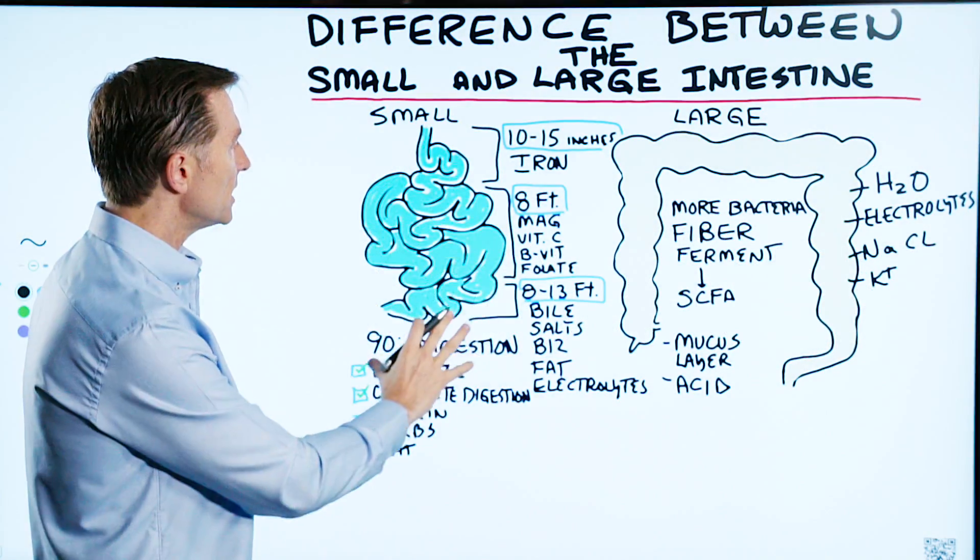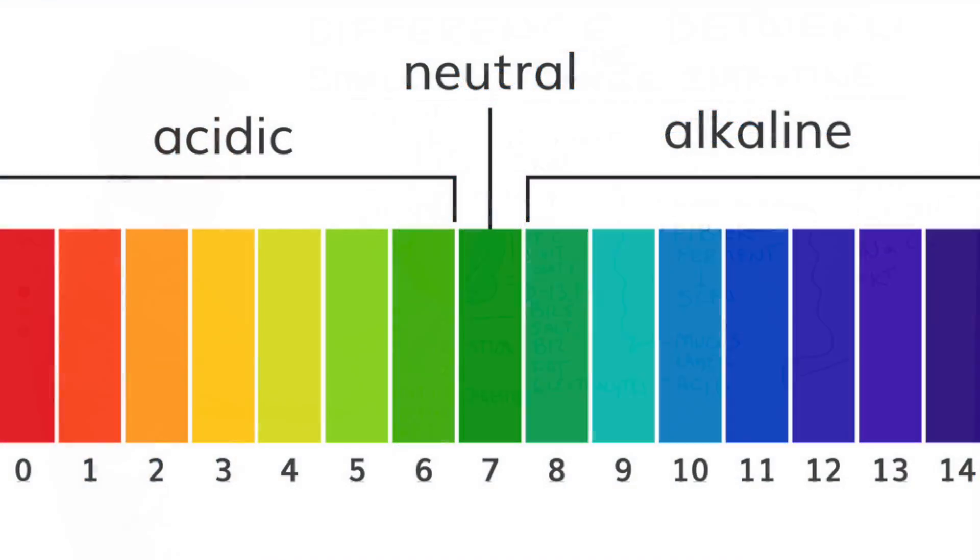So 90% of all the digestion occurs in the small intestine. Now it's alkaline, which actually triggers certain enzymes.